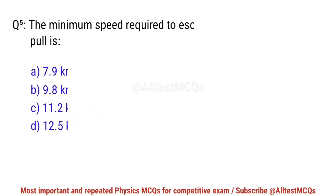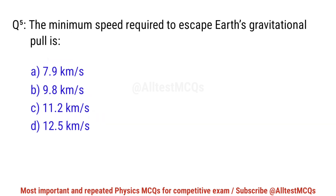Question No. 5. The minimum speed required to escape Earth's gravitational pull is? Right option is C. 11.2 km per second.